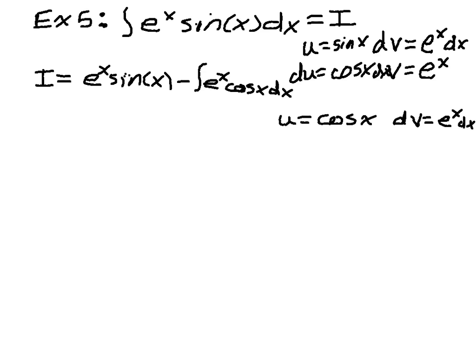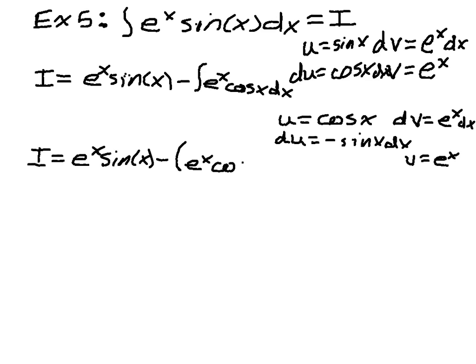Which I can almost fit on the screen. So now I have that i equals e to the x, sine of x, minus the quantity. Oh, I forgot to do the whole thing. Du is negative sine of x dx, and v is again e to the x, minus uv, so e to the x cosine of x.